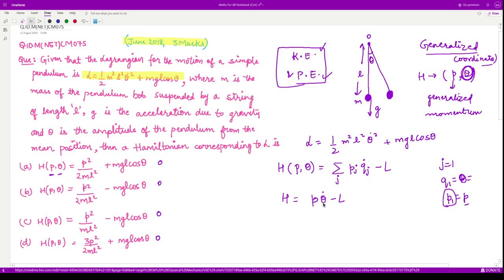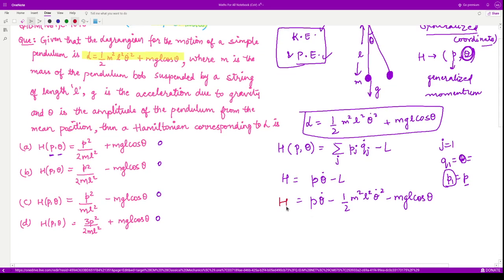So now, let us substitute the value of l here using this relation. So we have p theta dot minus half m square l square theta dot square minus m g l cos of theta. So from here, this is our h.